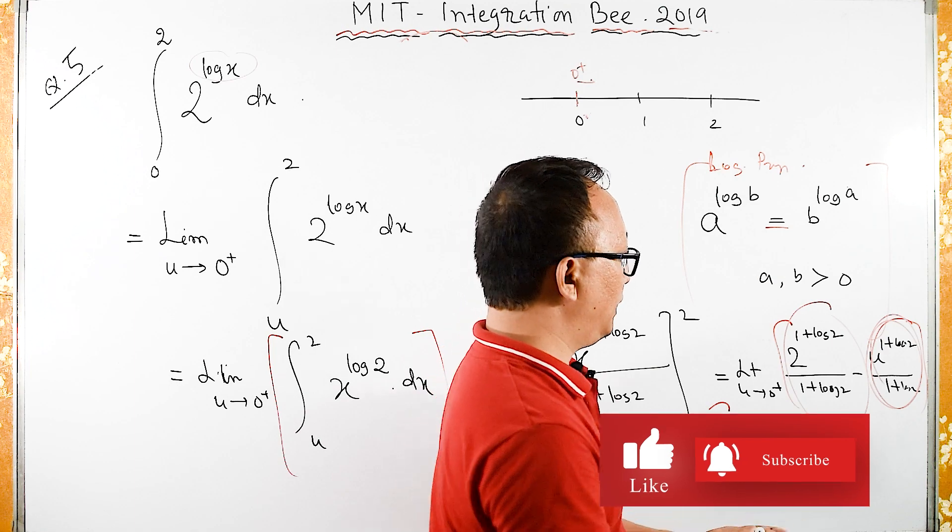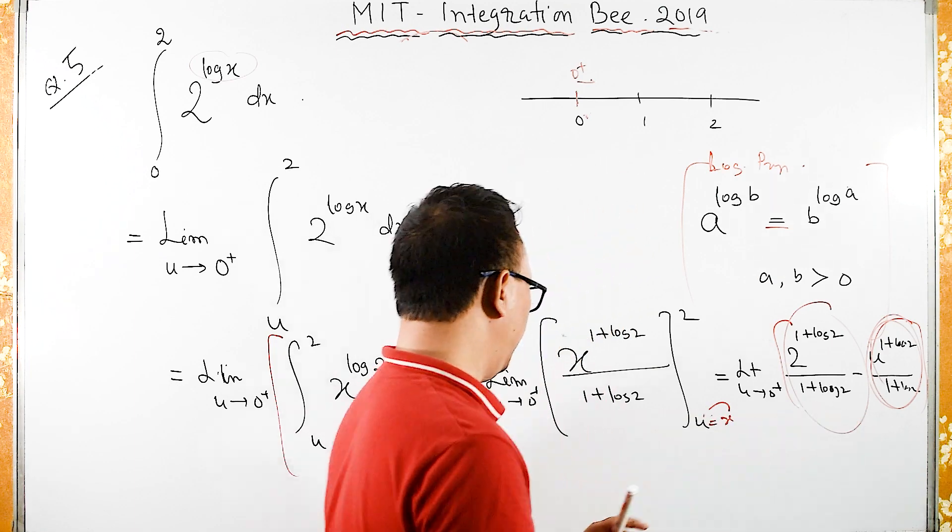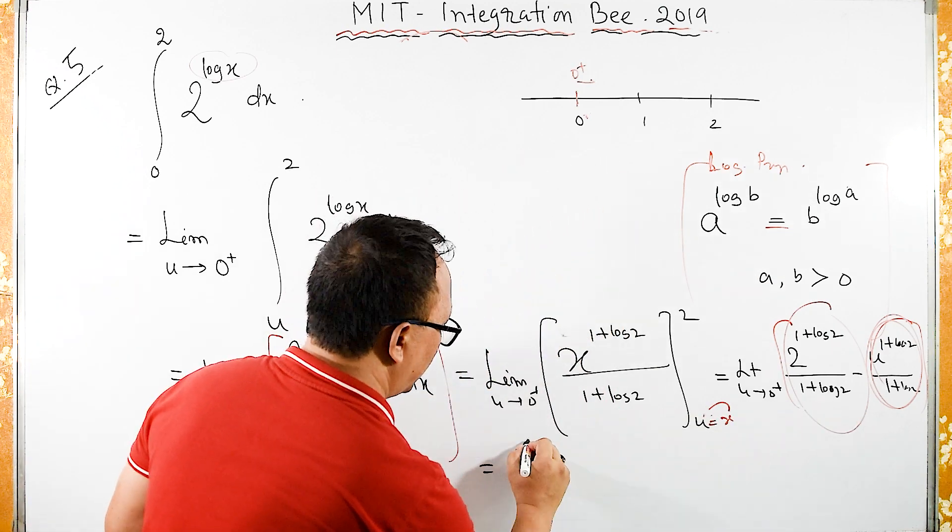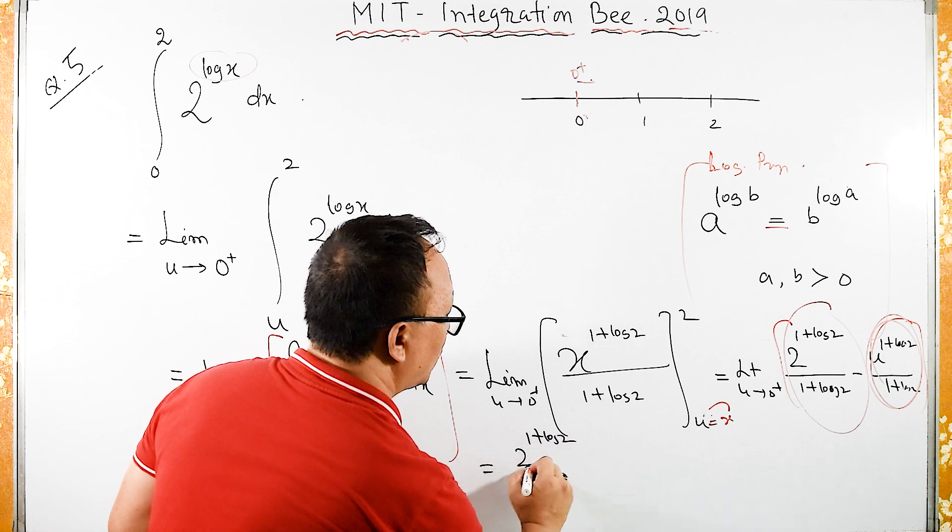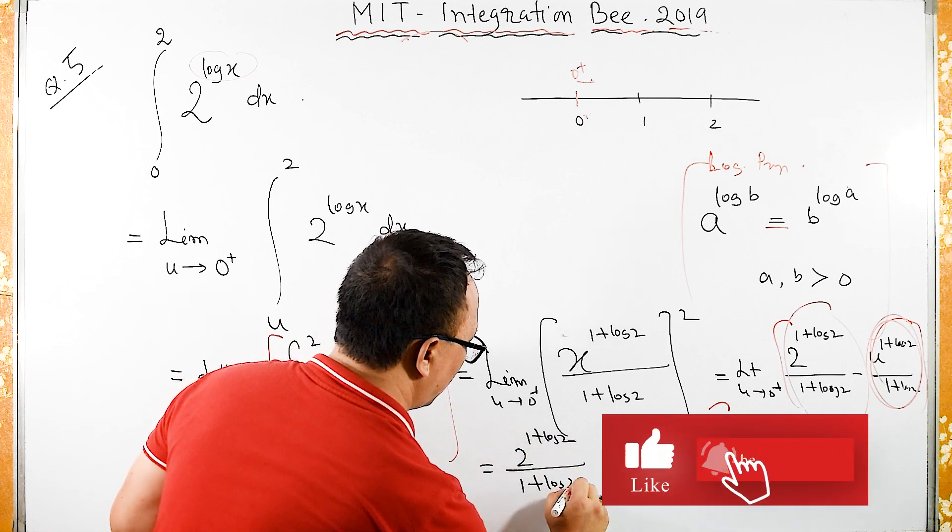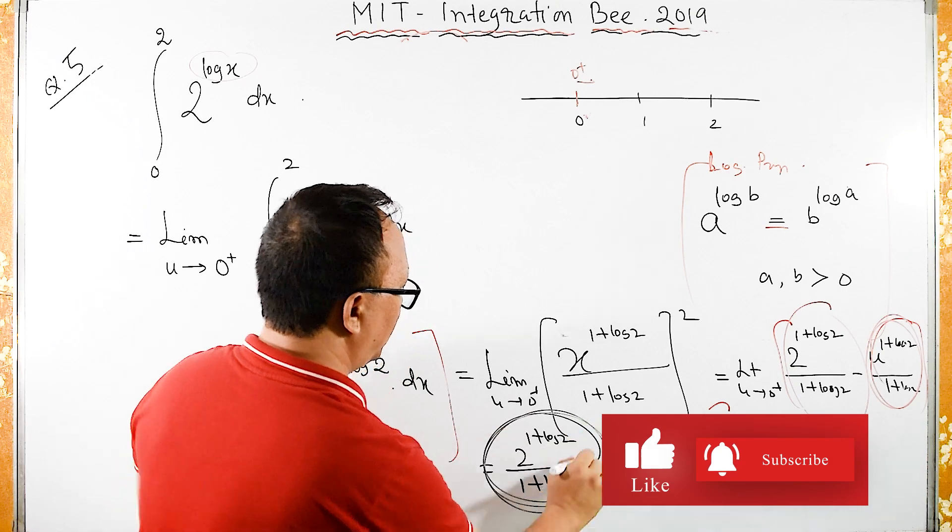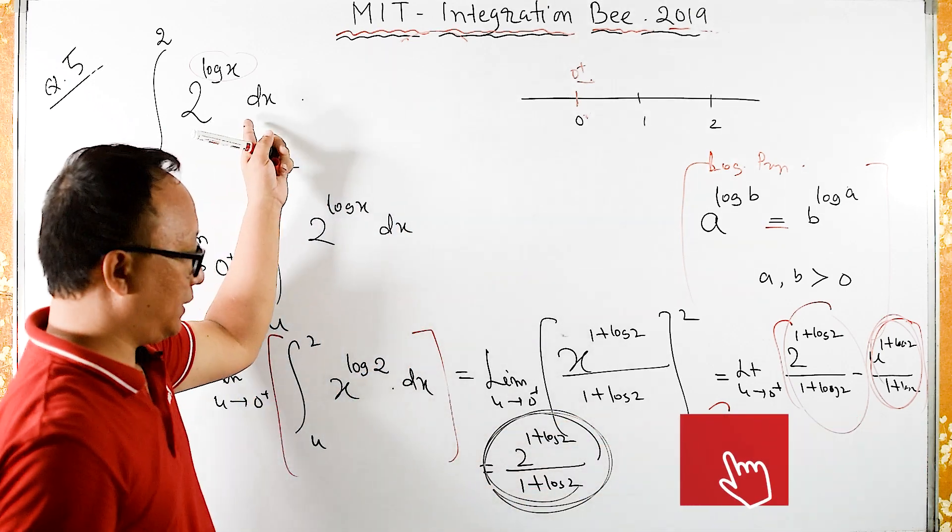This does not affect when u tends to 0, so therefore we have only 2 raised to 1 plus log 2 upon 1 plus log of 2. This is the required answer.